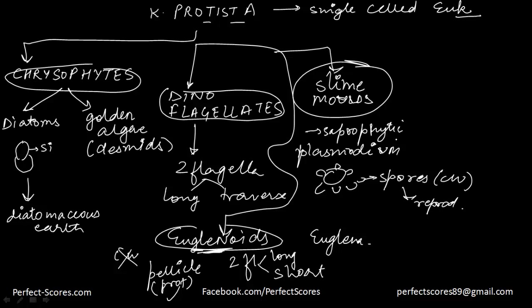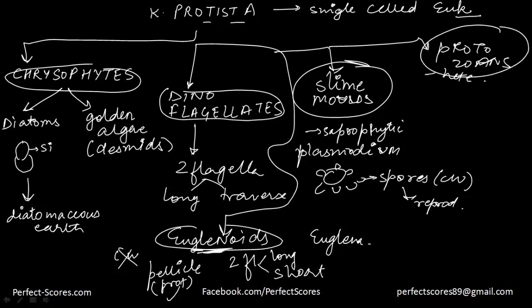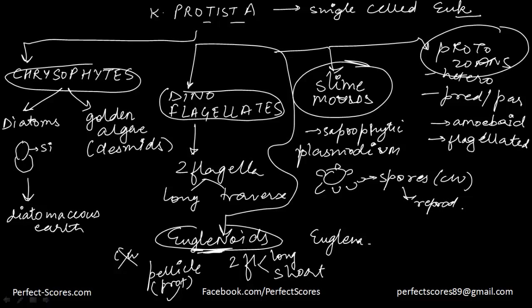The other part of kingdom Protista is the protozoans. Protozoans are all heterotrophs — they are either predators (they directly ingest other organisms) or they can be parasites (they find a host and live on that). There are basically four major groups: amoeboid protozoans (just like amoeba), flagellated, ciliated, and sporozoans.